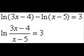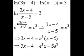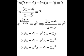Let us try a tougher problem. ln of 3x minus 4 minus ln of x minus 5 equals 3. So we have ln of 3x minus 4 divided by x minus 5 equals 3. Now to solve this, we take each side and put them as power of e. So we get 3x minus 4 divided by x minus 5 equals e to the third power. Now we multiply both sides by x minus 5. Then we distribute the e to the third power. Now we put all the x's on the left hand side and solve for x using algebra.